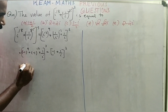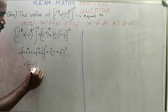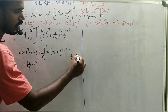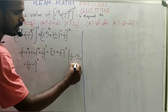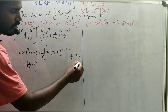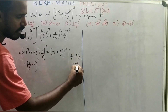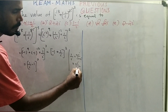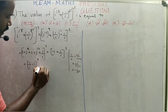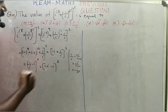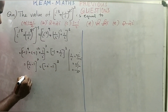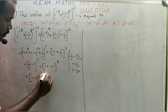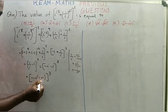Now 1/i = -i, since 1/i = i/i² = i/(-1) = -i. So the expression becomes (-i - 1)³. This is equal to (-1 - i)³, the whole cube.